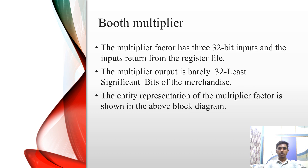Moving on to the Booth multiplier. The multiplier has three 32-bit inputs and the inputs are read from the register file. The multiplier output is from the least significant bit of the product. The internal representation of the multiplier is shown from the above block diagram.